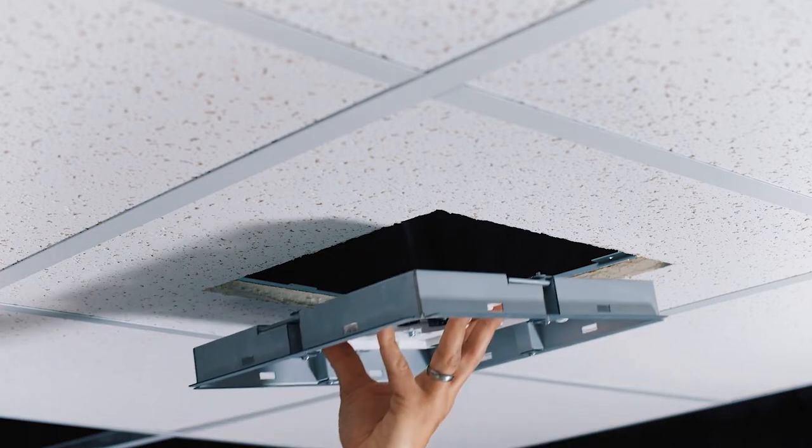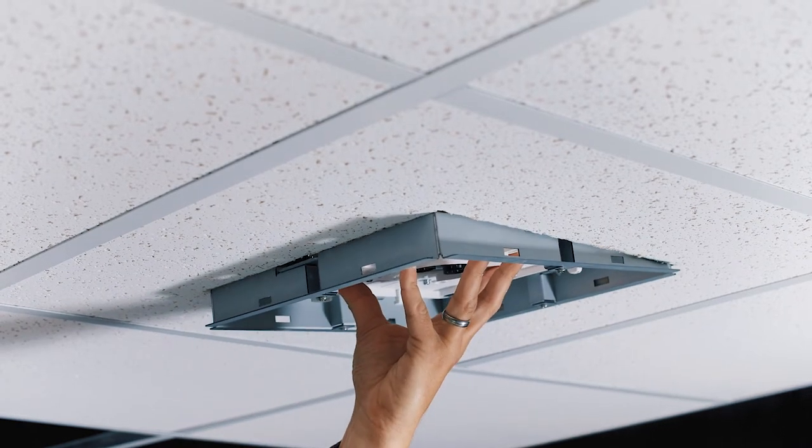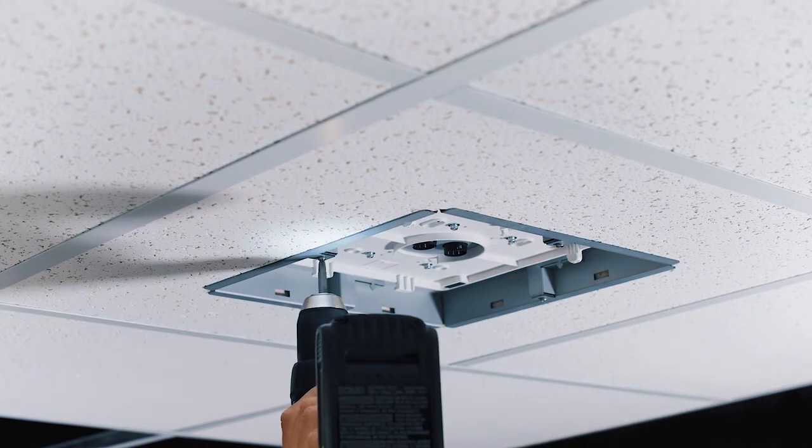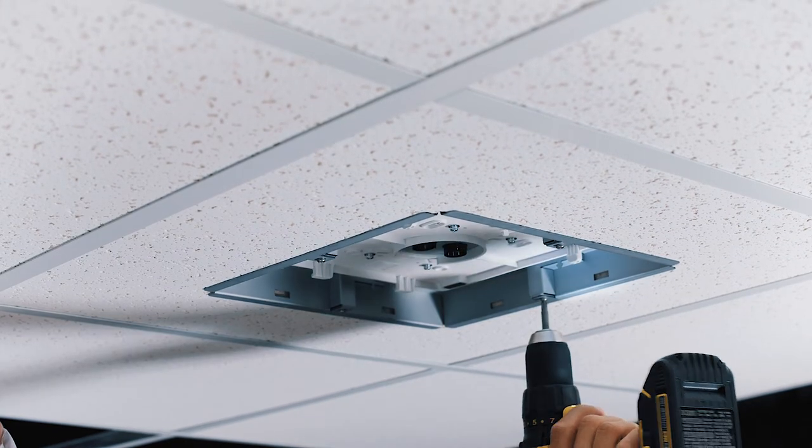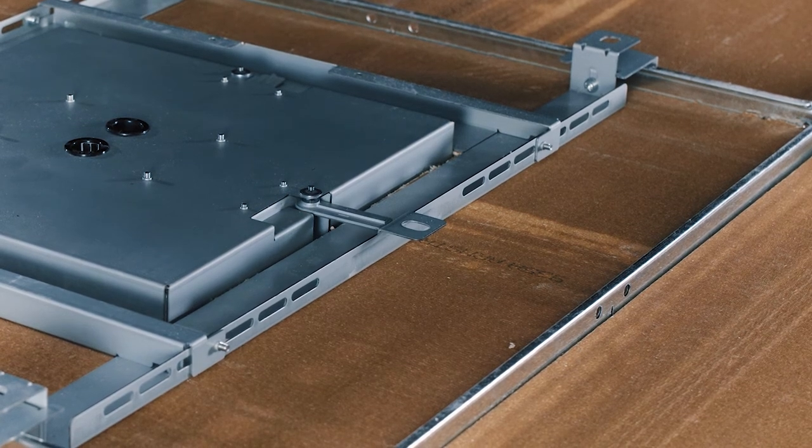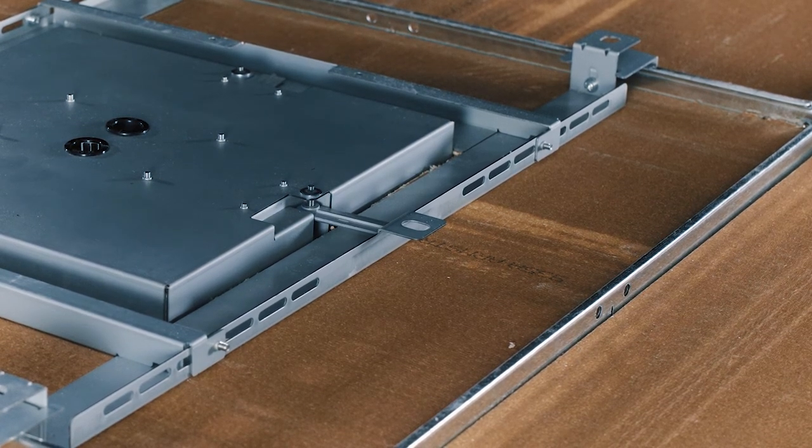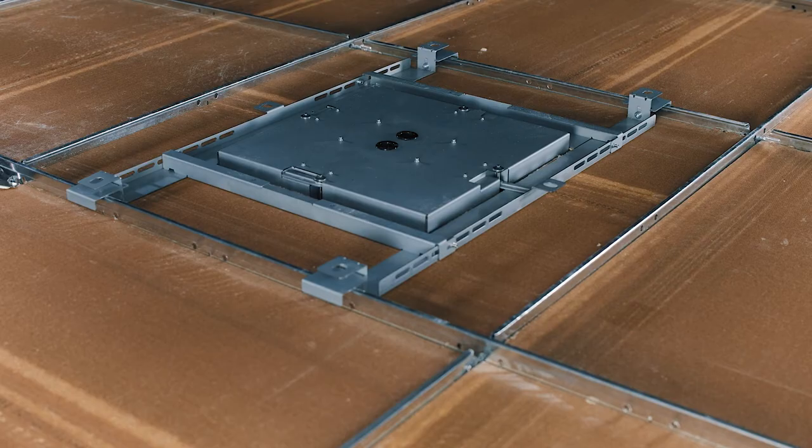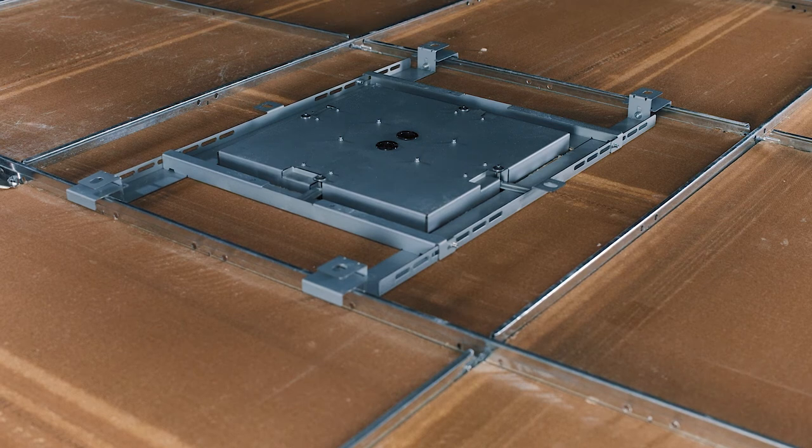Insert the flush mount adapter into the opening from below the ceiling tile or hard ceiling. Carefully turn the four mounting tab screws so that they support all sides of the adapter on the tile bridge. The tabs should be snug but not crushing the ceiling tile.